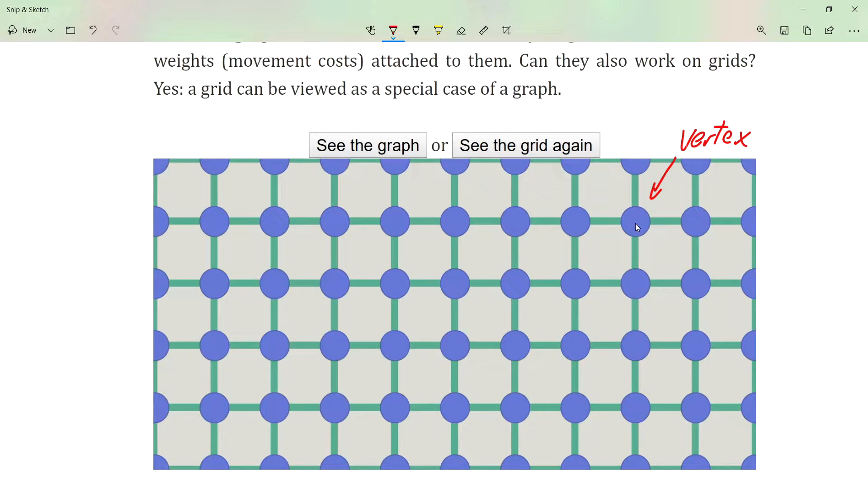Another thing that the graph has is a green line, and this is called an edge. Edges represent the relationship between vertices. So this vertex and this vertex are connected using this edge.